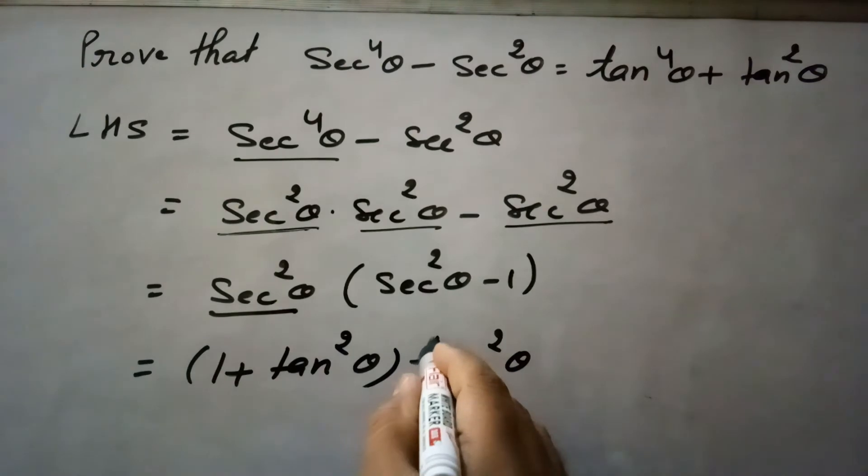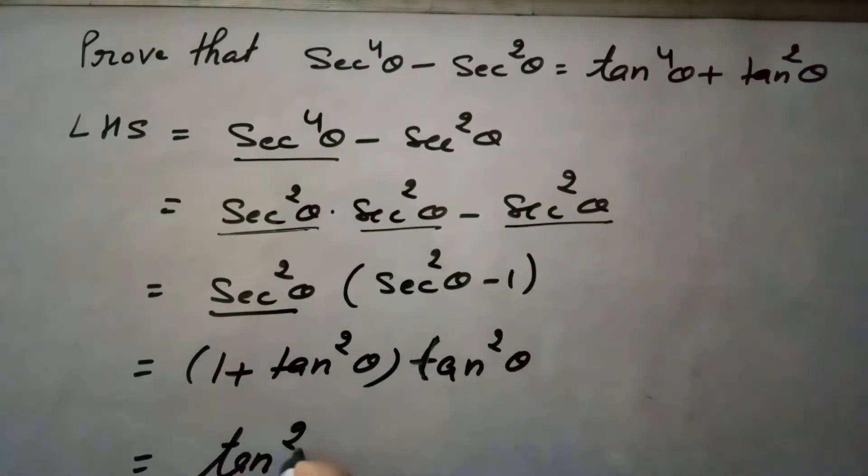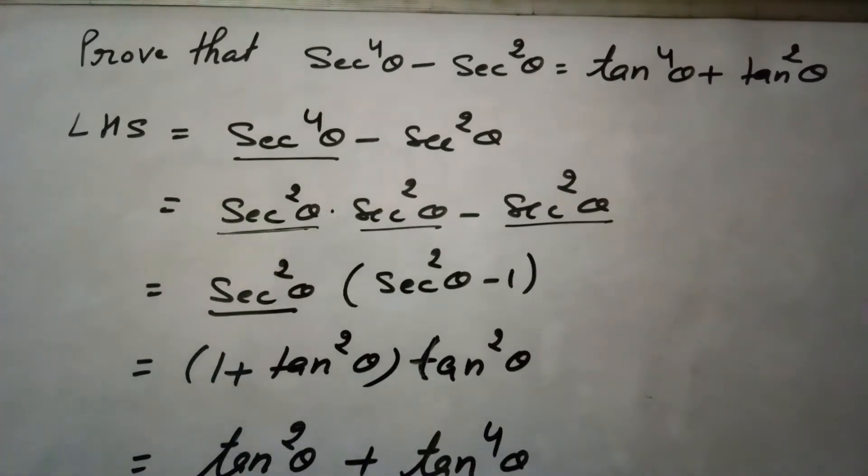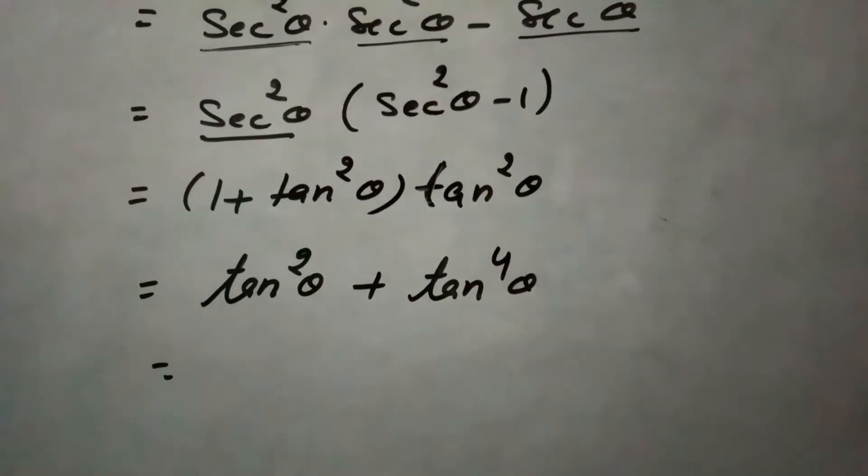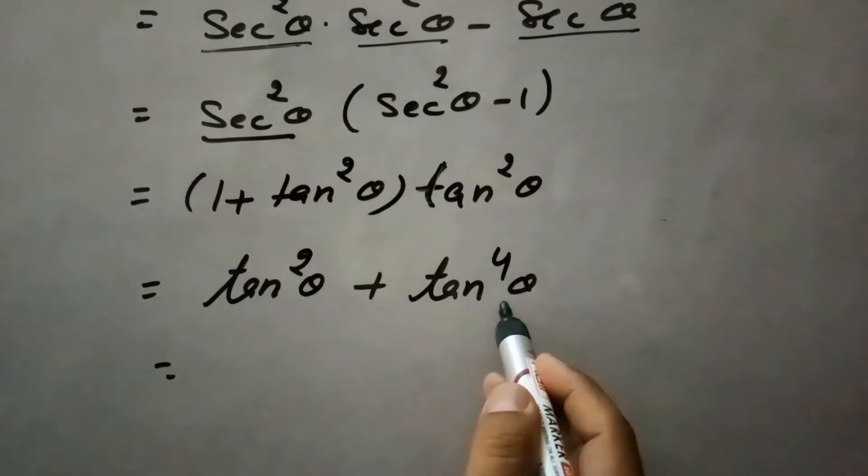when you multiply this, it becomes tan square theta into tan square theta. And tan square theta times tan square theta is tan 4 theta, which equals